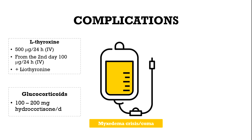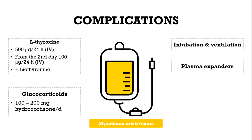In addition, glucocorticoids in the form of hydrocortisone are required, with a dosage of 100 to 200 mg per day. If necessary, intubation and ventilation, infusions of plasma expanders, glucose, and electrolytes can be done. Hypothermia improves with thyroid hormone substitution, so further warming measures are not needed.